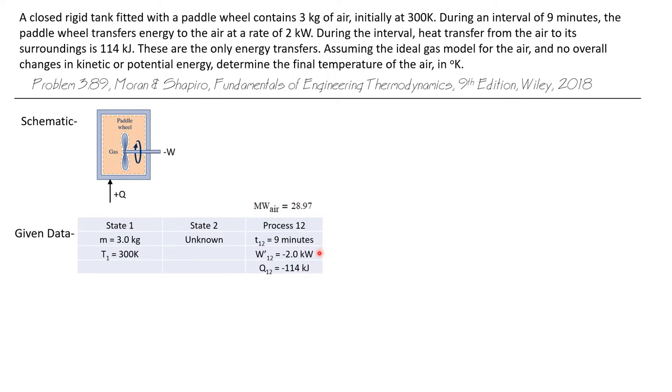The rate at which work is performed through the paddle wheel is two kilowatts, but that is negative two kilowatts because work is going into the system. And the heat transfer is given as 114 kilojoules. That is also negative since energy is being transferred out of the system via heat transfer. We also will take note that the molecular weight of air is 28.97.